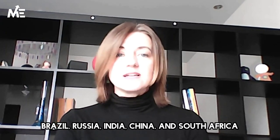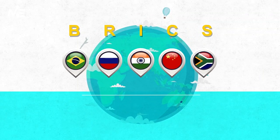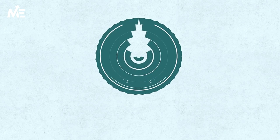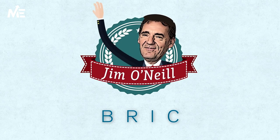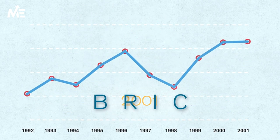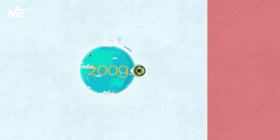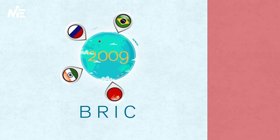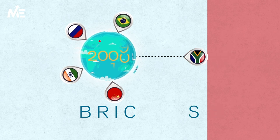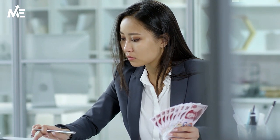The term BRICS refers to the nations of Brazil, Russia, India, China, and South Africa. British economist Jim O'Neill coined the term BRIC to describe these countries as economies poised for rapid growth, which has recently surpassed the economic power of the G7 countries, nearly 30 years ahead of experts' predictions. South Africa officially joined the BRIC group in December 2010, and the acronym changed from BRIC to BRICS.